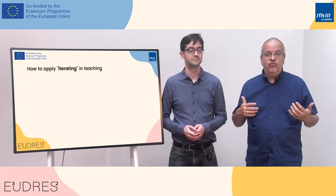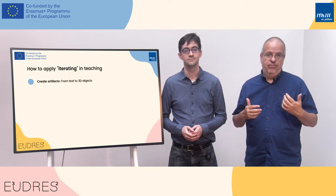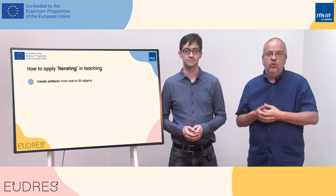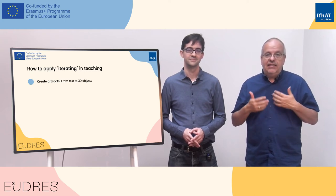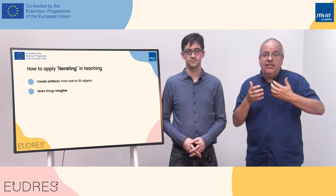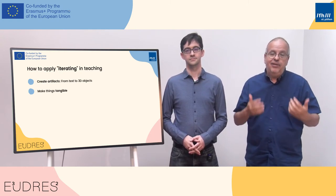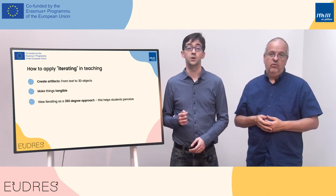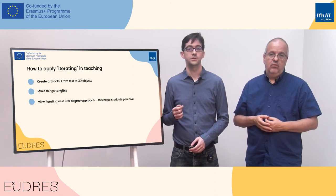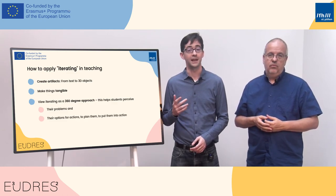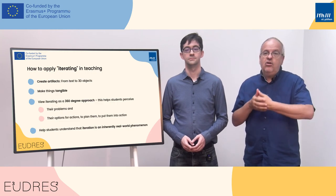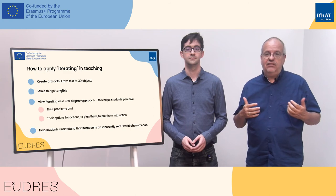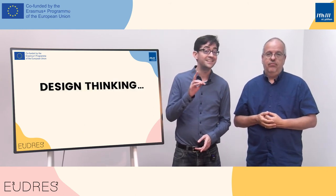Some remarks and hints for using iteration in a lecture. Part of a productive learning process is to create artifacts — this can be anything from text to a 3D prototype object. Like the steps in the defining phase, this is another important implementation of deeper learning and tangibility. Iterating contributes to a learning experience that is like a 360-degree approach to different topics and related problems. It helps students to perceive their options for actions, to plan them and translate them into action. Design thinking is not about a theoretical approach — iteration contributes to learning settings that are intensely connected to real-world problems, and it points out ways to tackle these.